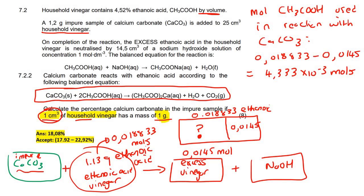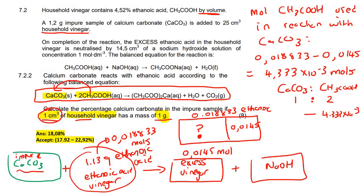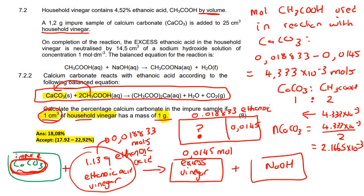Now we look at the mole ratio between ethanoic acid and calcium carbonate in the balanced equation, which is 2:1. So moles of CaCO₃ = 4.333 × 10⁻³ ÷ 2 = 2.1665 × 10⁻³ mol. That is how many moles of calcium carbonate were present in the container.